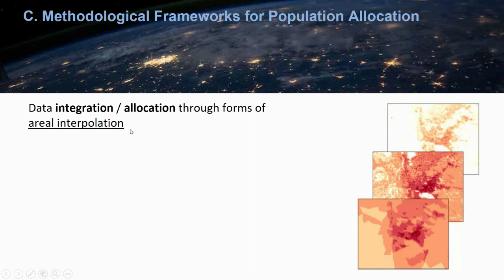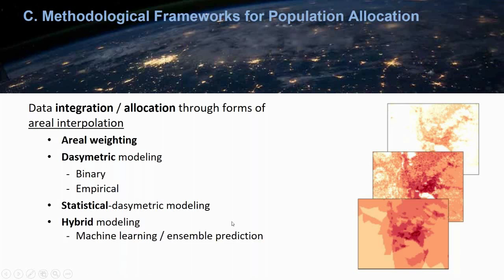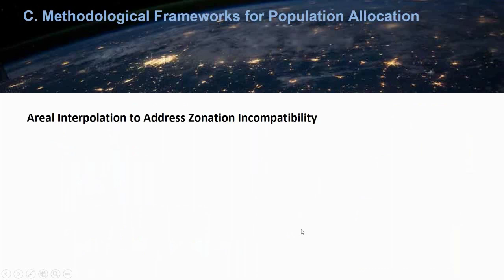The areal interpolation method is the underlying methodological framework for many of these efforts. The simplest method is areal weighting. Dasymetric modeling is a slightly more advanced areal interpolation method often applied using ancillary data in binary fashions or as empirical inputs. Statistical dasymetric modeling often overlaps with more traditional dasymetric mapping, and hybrid modeling often combines machine learning or ensemble prediction to produce population weights for dasymetric refinement. There is a bibliography at the end of this presentation with many sources on dasymetric modeling and areal interpolation.